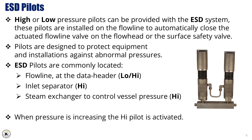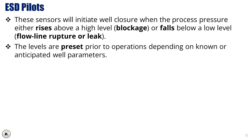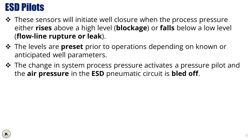When pressure is increasing, the high pilot is activated. These sensors will initiate well closure when the process pressure either rises above a high level due to a blockage, or falls below a low level due to flowline rupture or leak. The levels are preset prior to operations depending on known or anticipated well parameters. The change in system process pressure activates a pressure pilot, and the air pressure in the ESD pneumatic circuit is bled off.